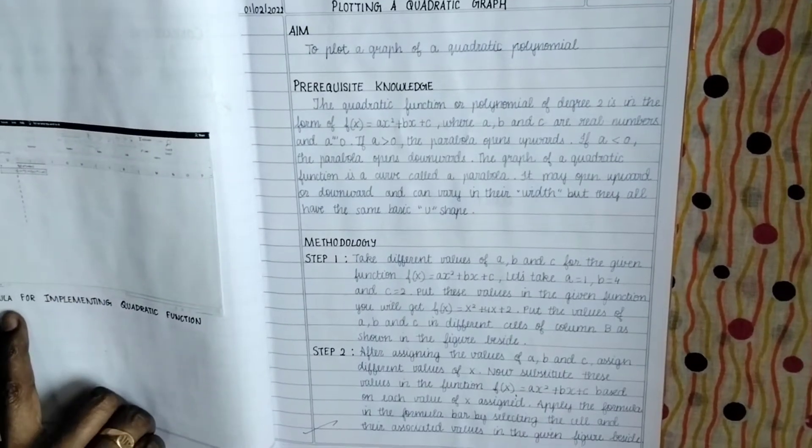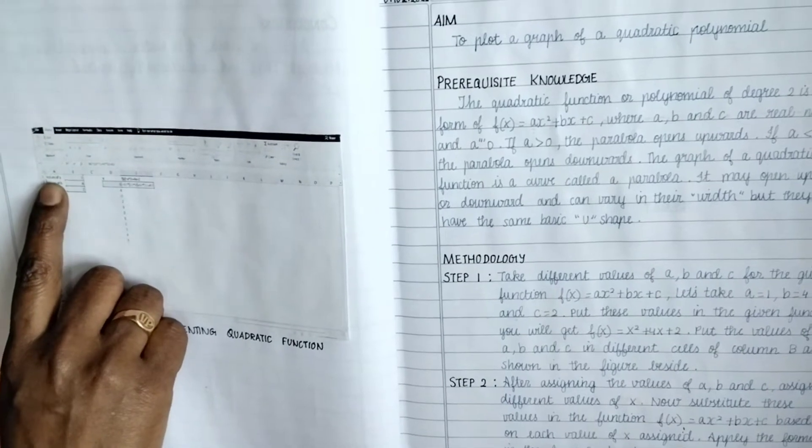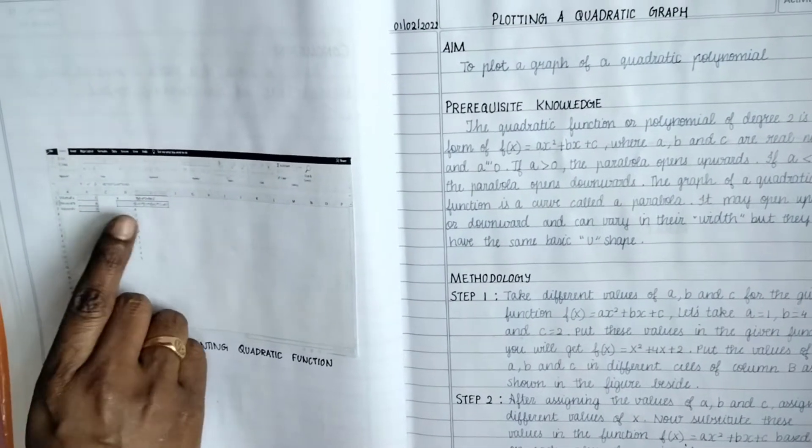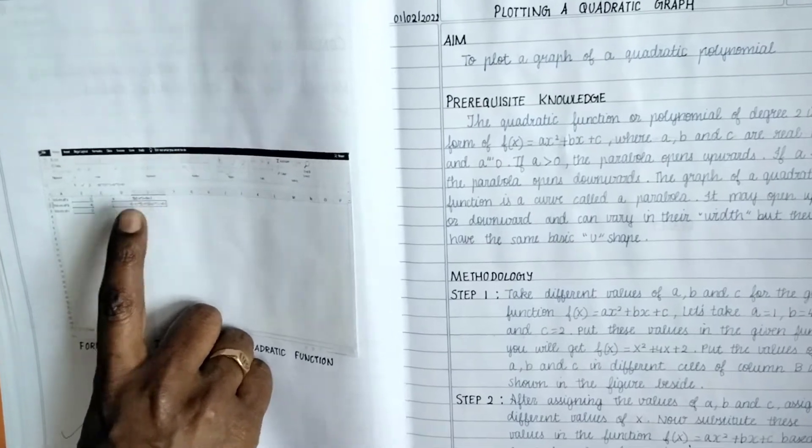So in the left-hand side form, formula for implementing quadratic function that is being entered. You see here values of a, values of b, values of c we have to enter, and this is the quadrant. It's very little minute, maybe if you zoom in inside you will be able to see.